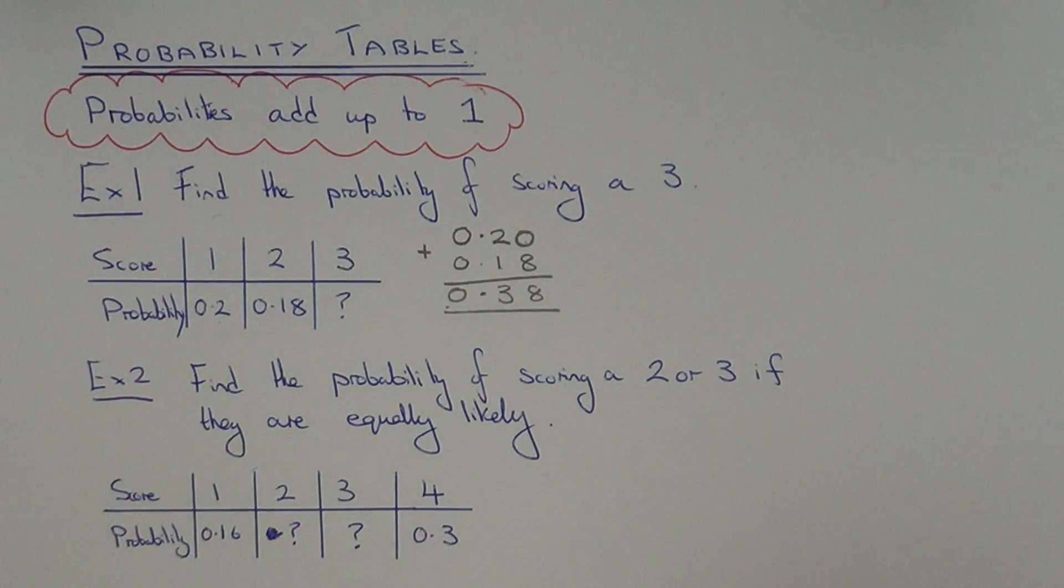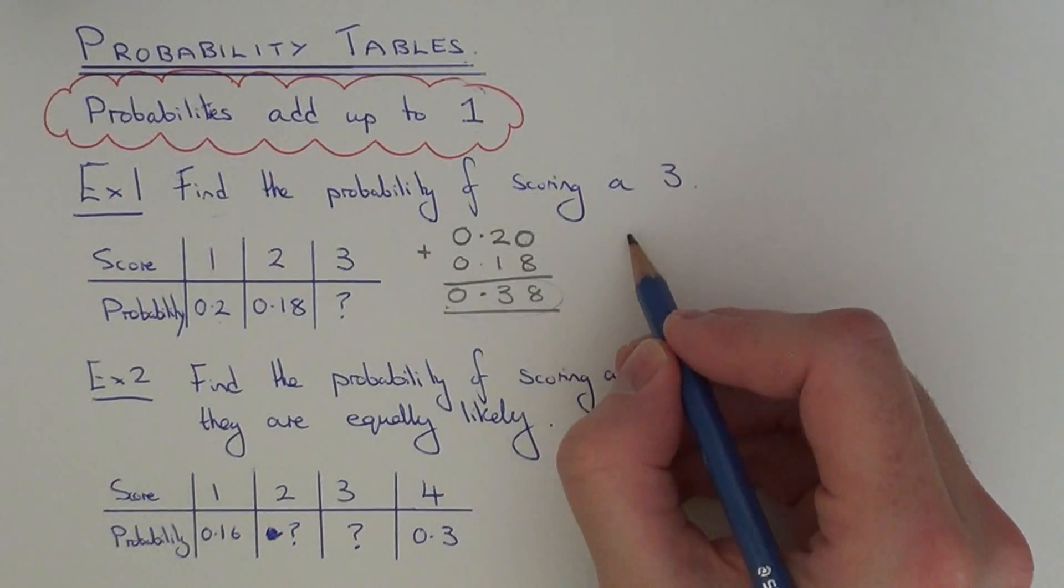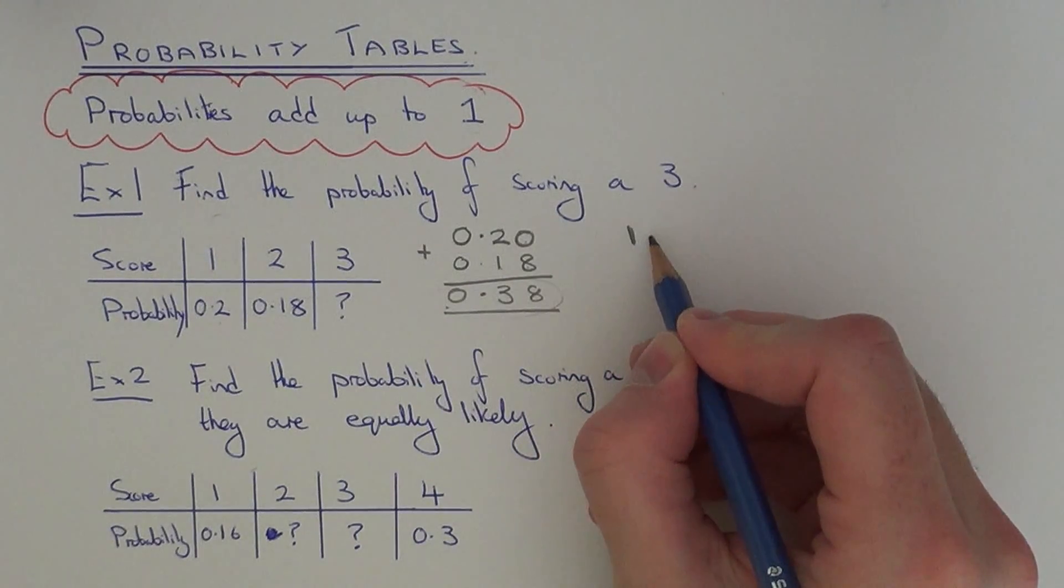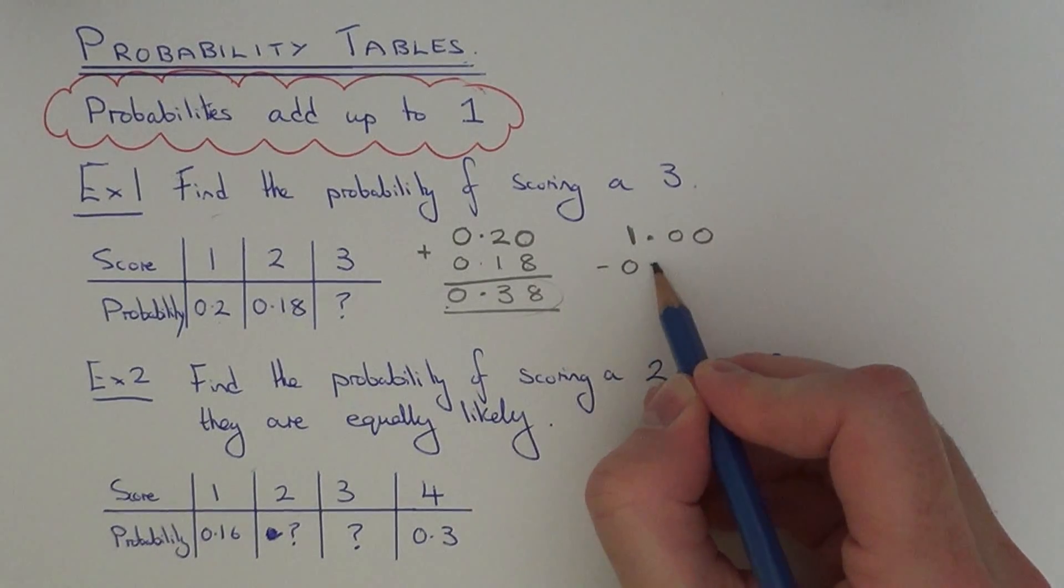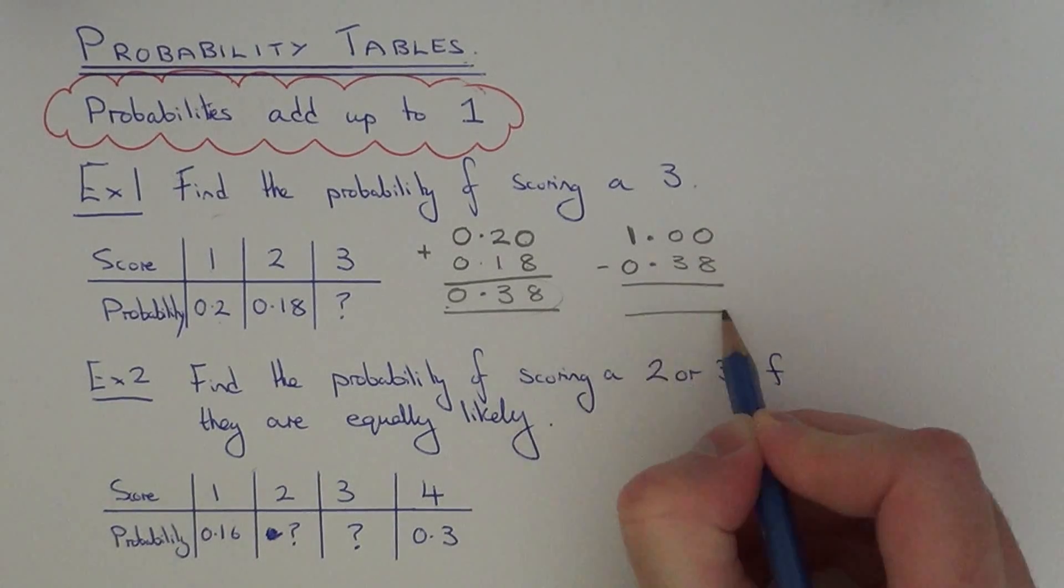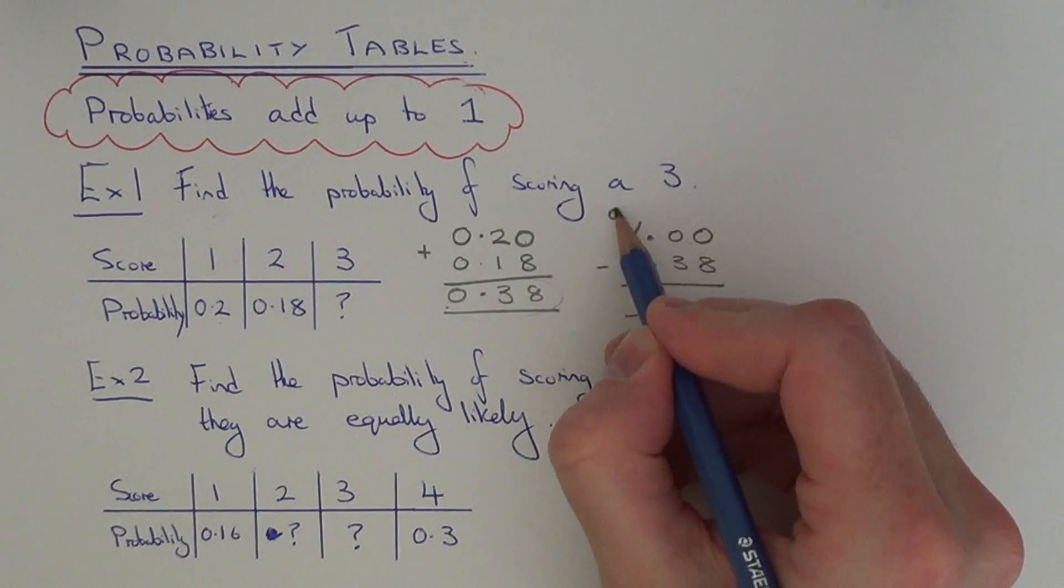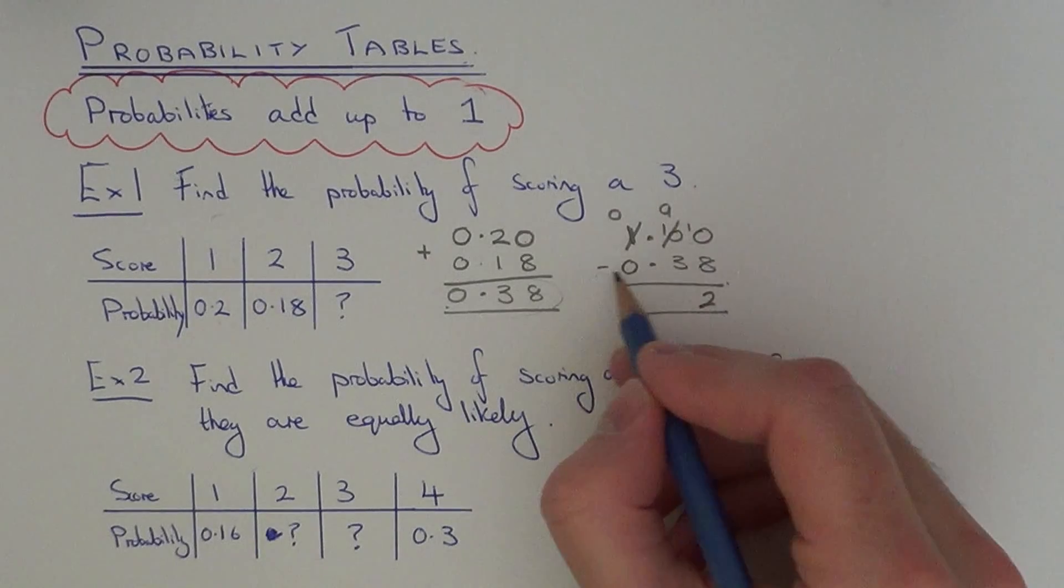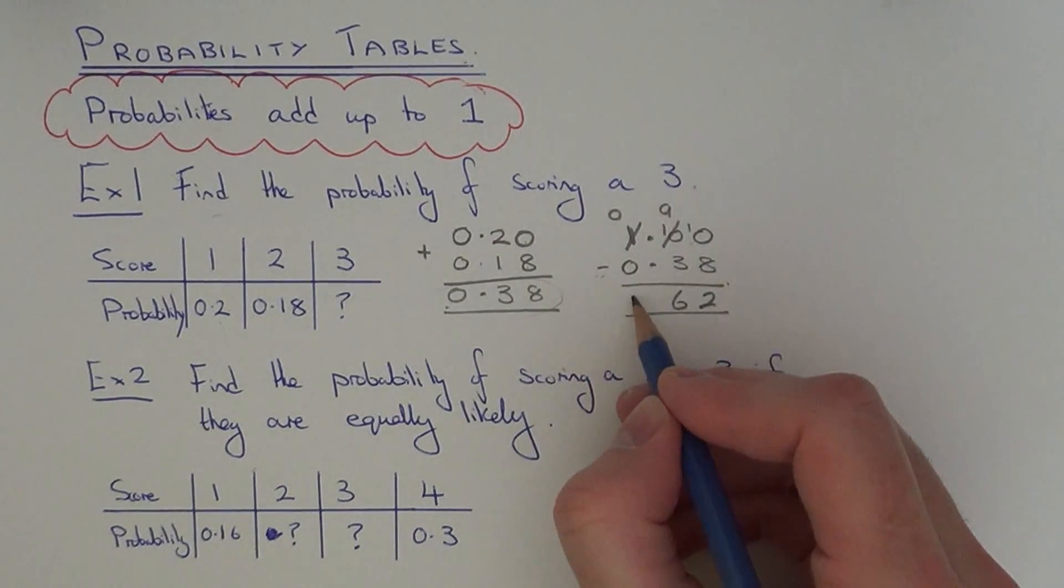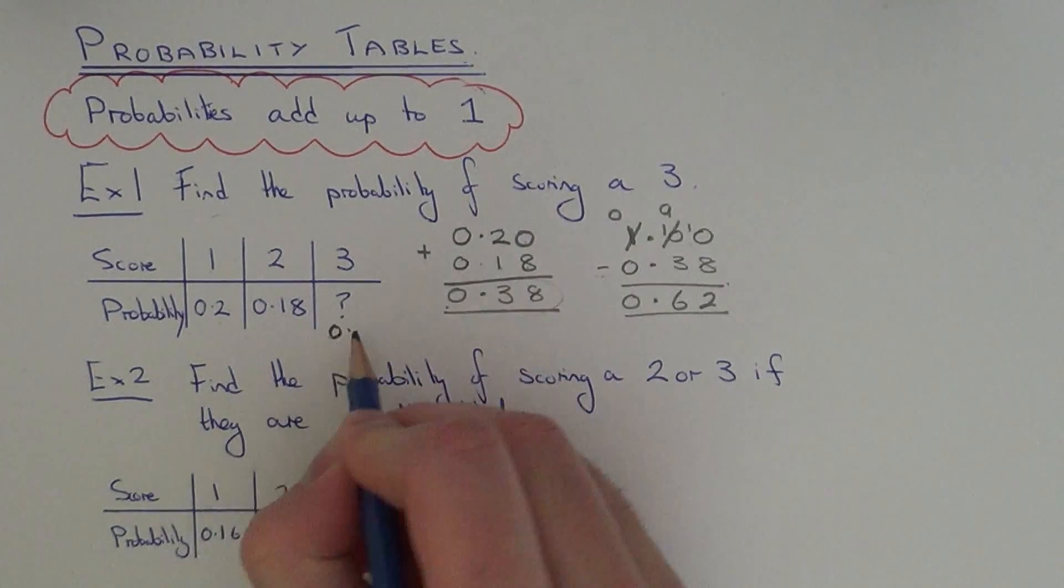So once we've done that, since the probabilities in the table should all add up to 1, we can take this answer away from 1. Again, I'm going to write down 1 as 1.00, because this will make things easier. So 1 minus 0.38. 0 take away 8 can't do, so I'm going to borrow 1 off the 1. So 10 take away 8 is 2, 9 take away 3 is 6, and 0 take 0 is 0. So the probability of scoring a 3 on this spinner would be 0.62.